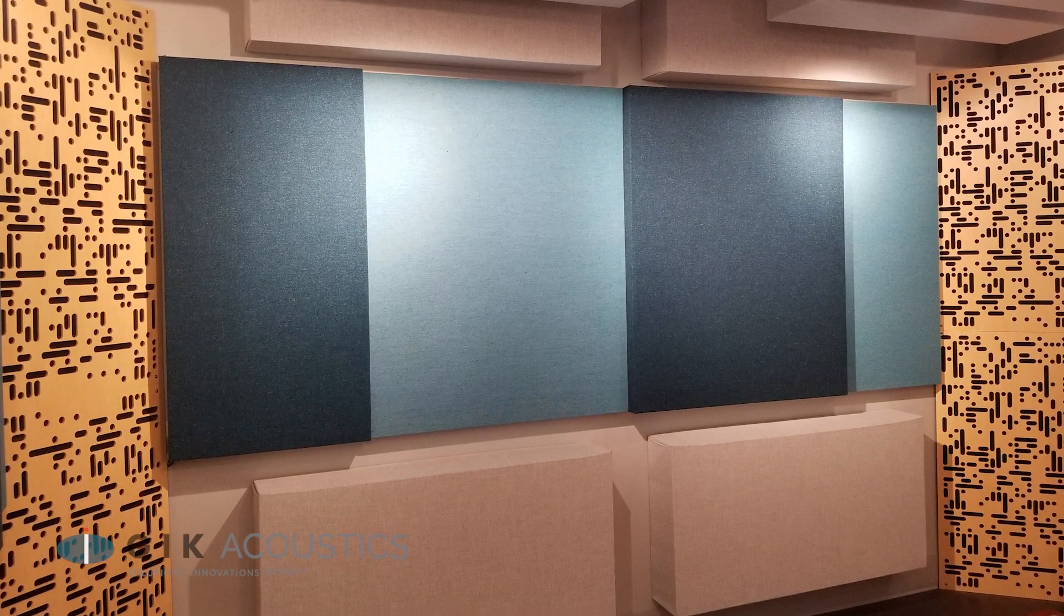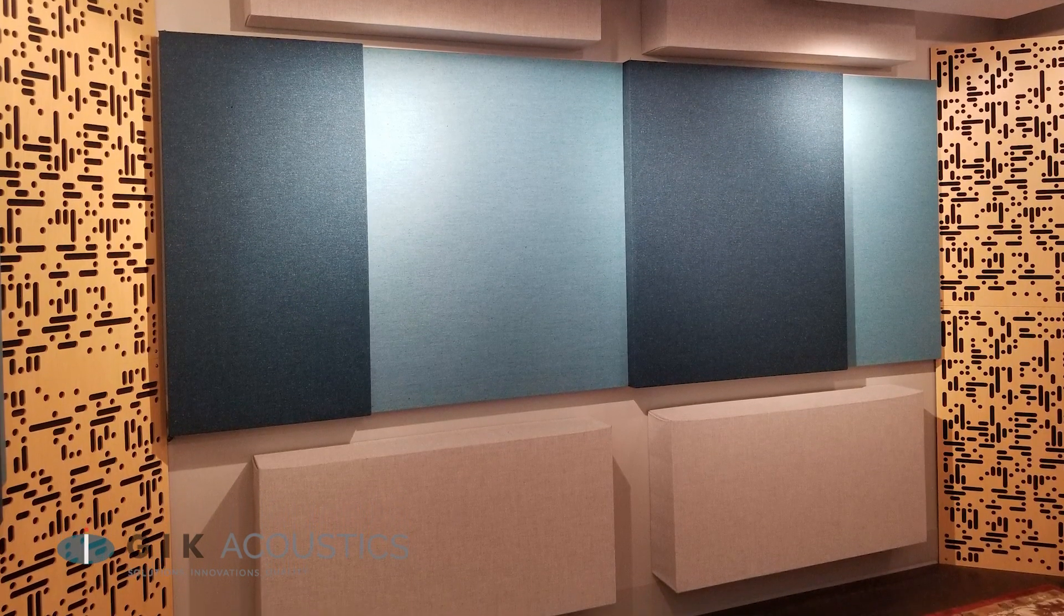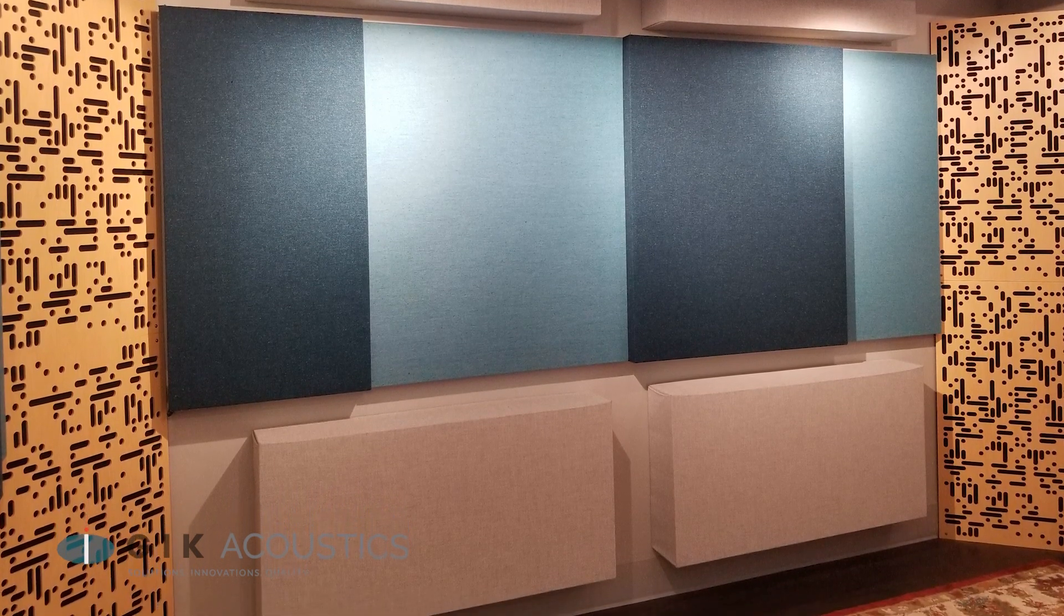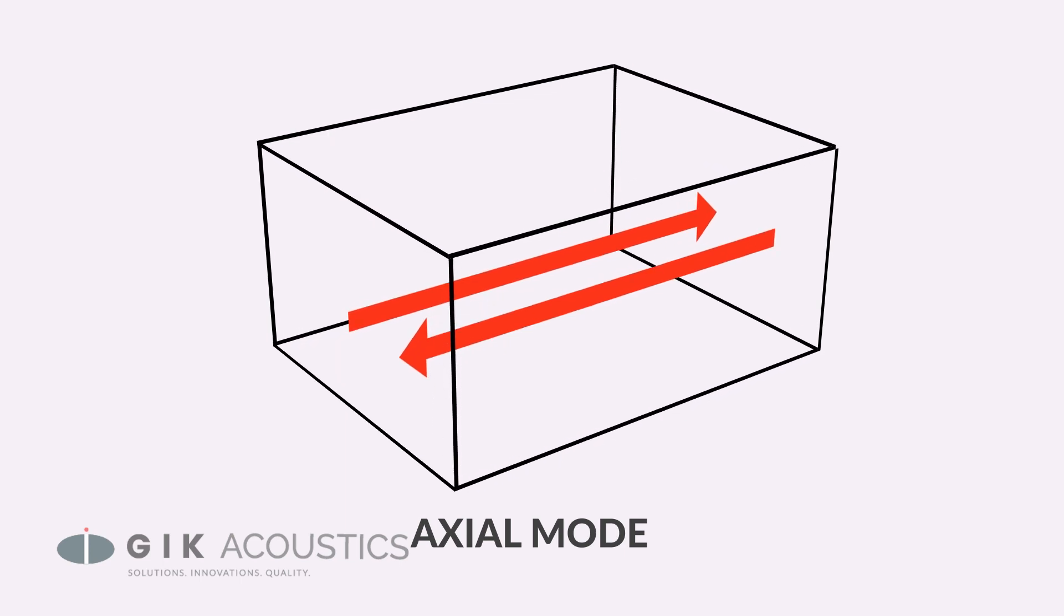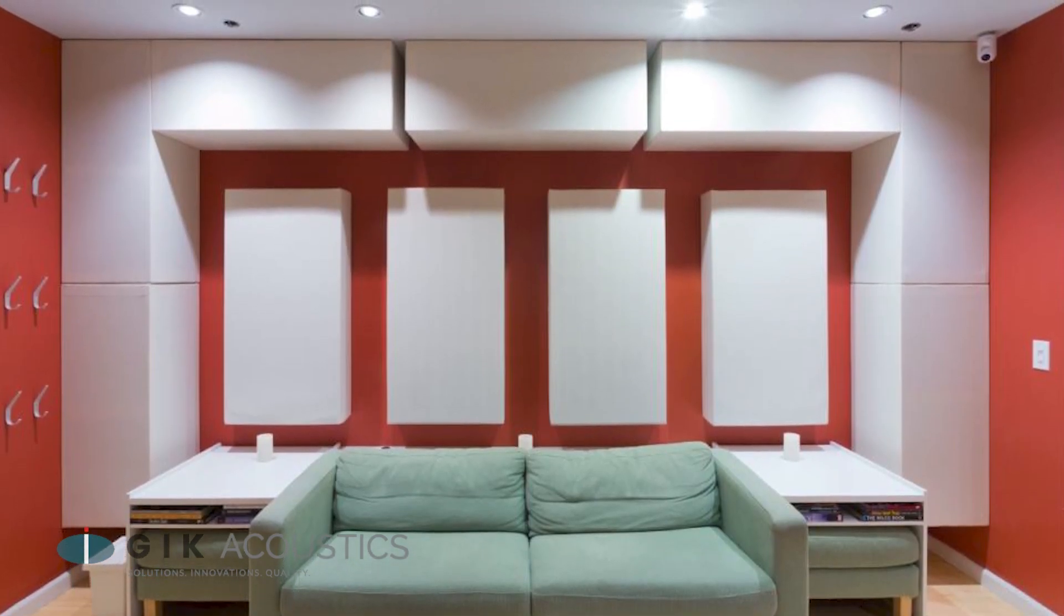Sometimes in order to solve a modal issue, you'll want to disrupt the reflections that are occurring on one of the walls that's creating the standing wave. So for an axial room mode that's working front to back, that would mean treating the front or rear wall with absorption.